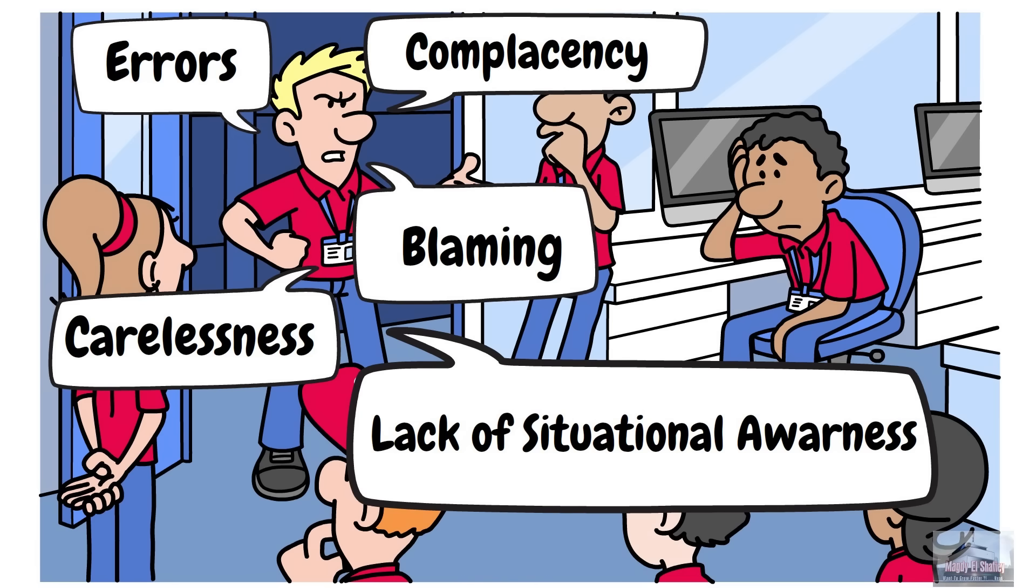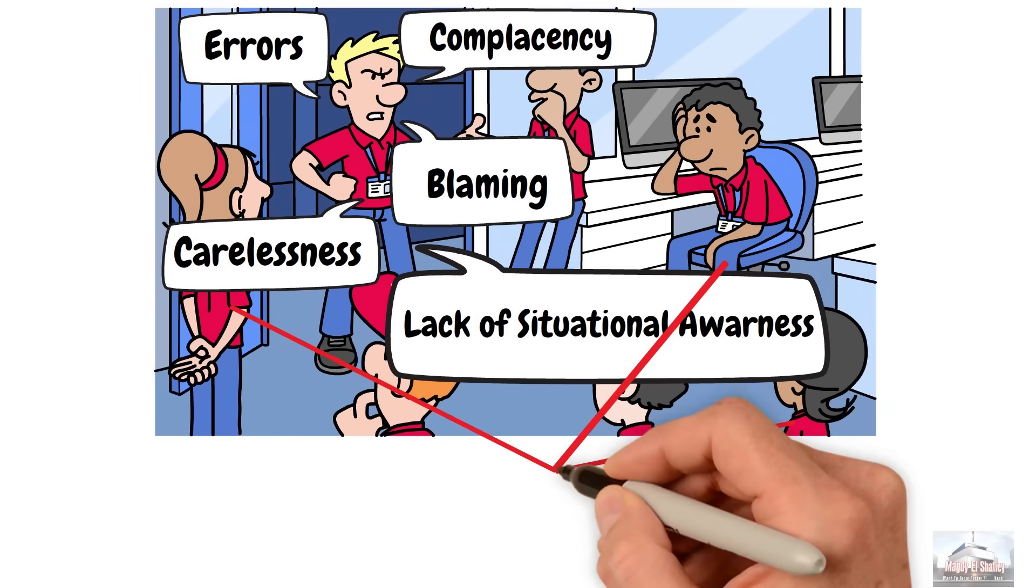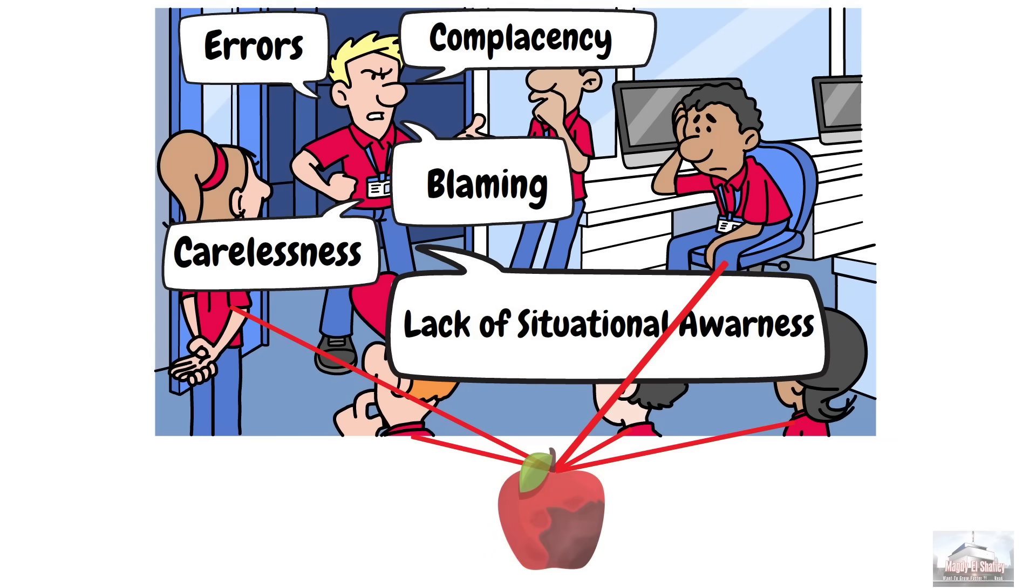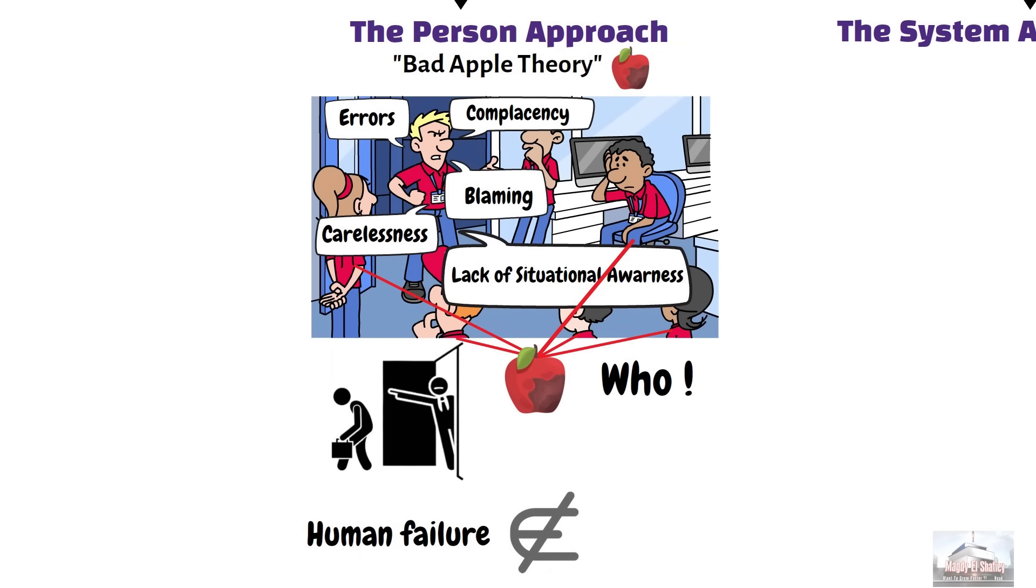According to this view, human error is treated as the cause of incidents. Often leading to blame being placed on individuals who are considered the bad apples. This perspective focuses on finding who caused the problem. Safety, in this view, is believed to improve by removing faulty individuals. Within this approach, human failures are seen as unexpected events that do not naturally belong within the system.